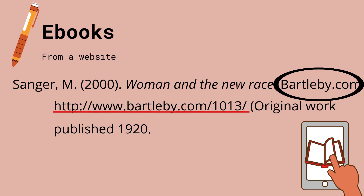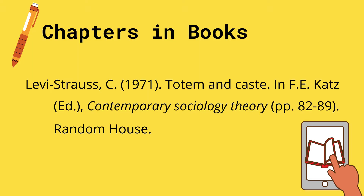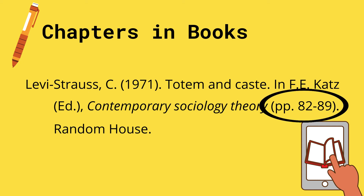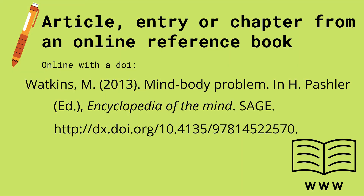For chapters in books, begin with the author's name — for example, Levi Strauss C. in 1971 — then the title of the article, such as 'Totem and Cast,' the contributor or editor's name — for example, F.E. Katz — where the name begins with the initial of the first and middle name, then the surname. It follows the name of the book, indicate the pages where the article can be found — for example, pages 82 to 89 — and then the publisher, which in this example is Random House.